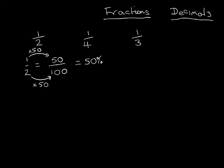Let's choose another one — this is a bit more tricky. Sometimes the number on the top isn't one. So if we had three over twenty — how would we say that fraction? It's three twentieths. Imagine splitting a pizza up into twenty bits and you had three of them. That wouldn't be very much, would it?